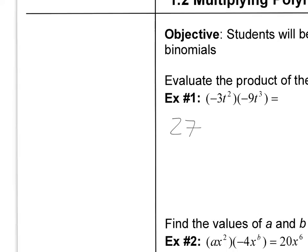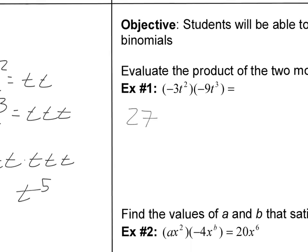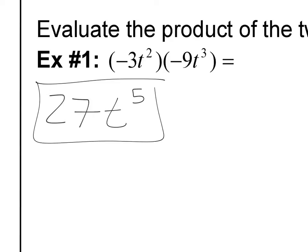Let's explain why real quick. t squared is really like saying t times t. And t cubed is really like saying t times t times t. So really I'm saying t times t times t times t times t. Well, how many t's are there total being multiplied together? There's 5, so that's t to the 5th. That's why I can just add the exponents. This is t to the 5th. Done.